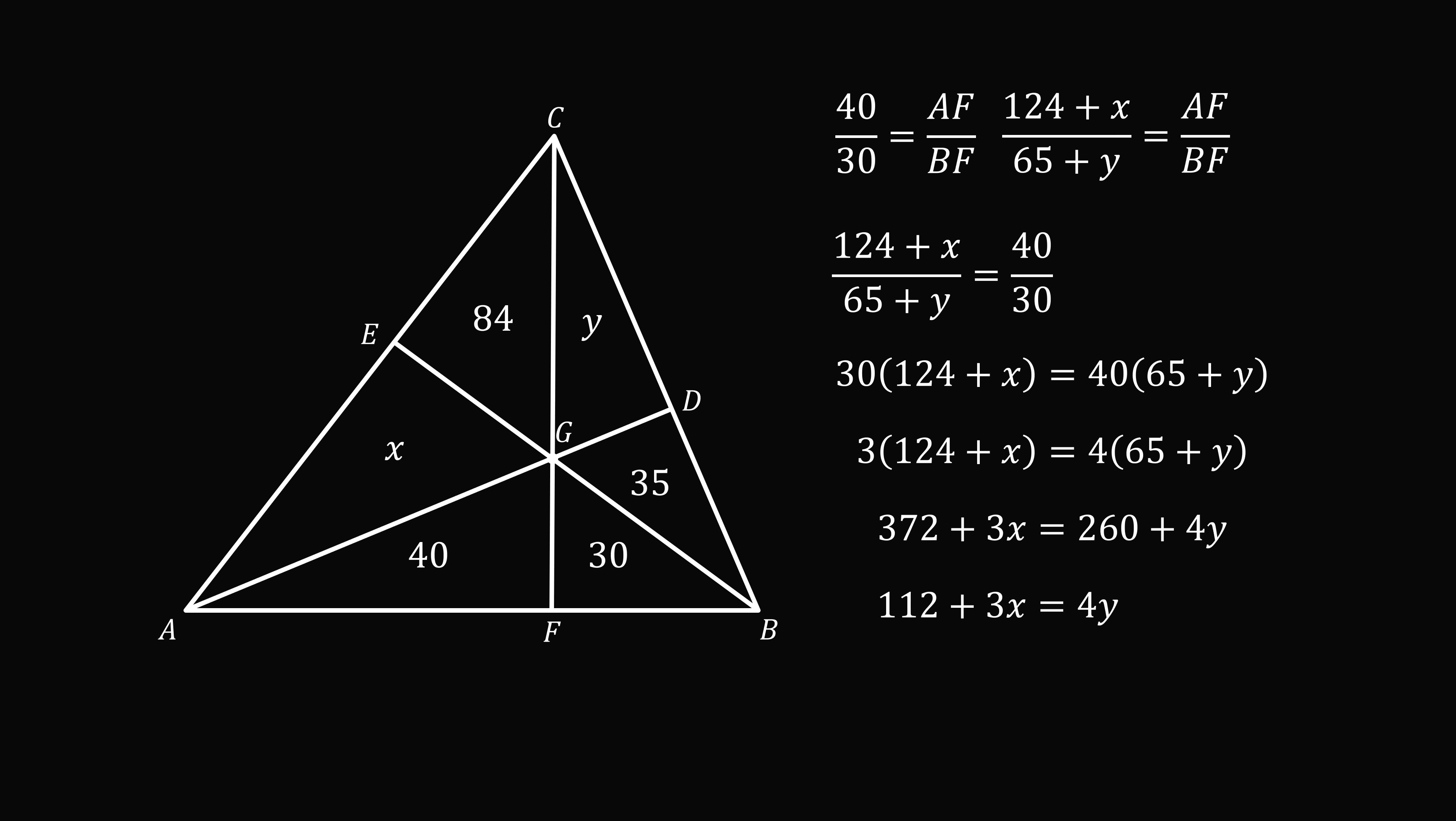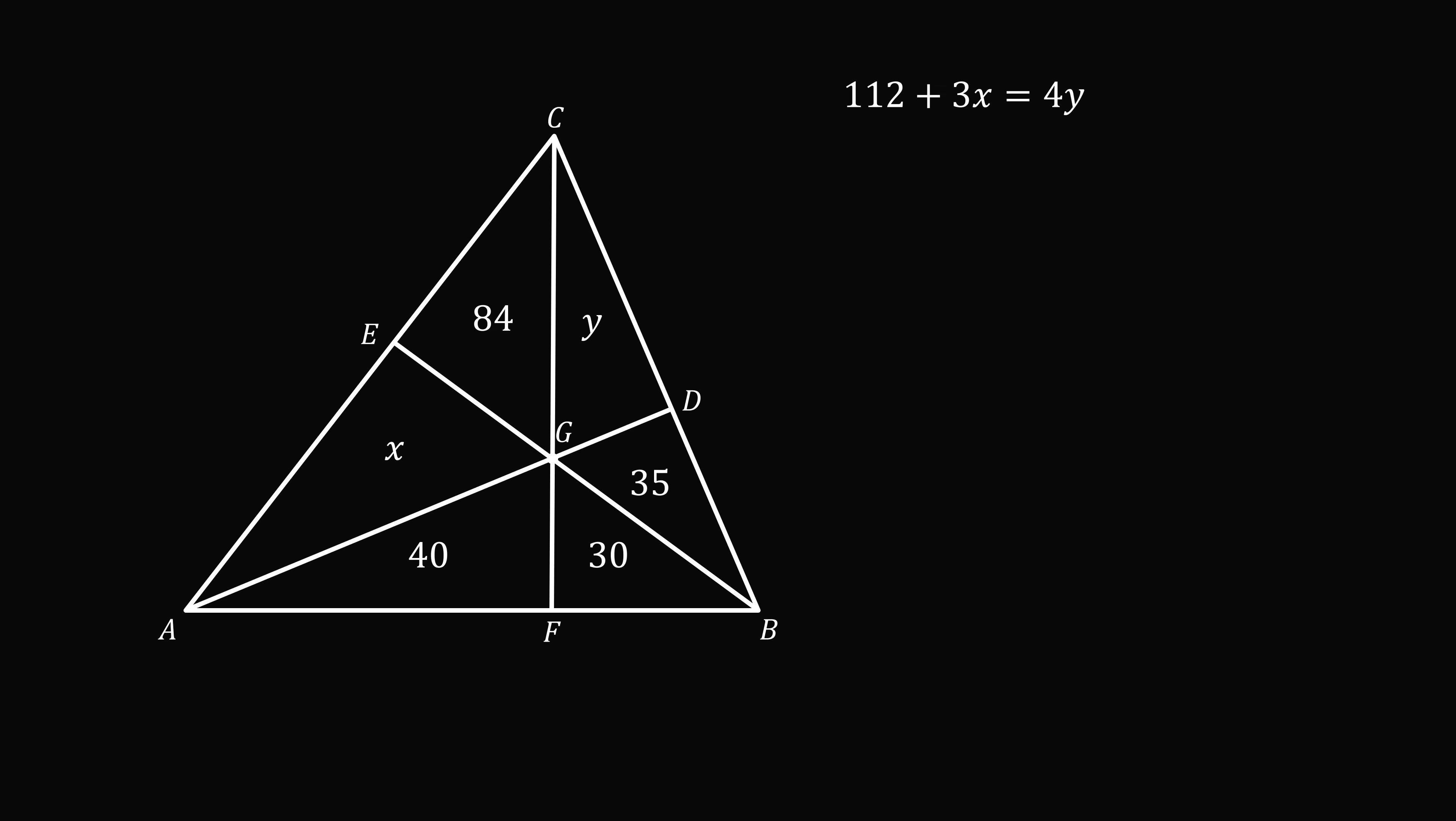So we made some progress, but we're still not there. We still need to figure out what the values of x and y are. So we need another equation. So we'll put this equation to the side. And now let's take another side of the triangle and try the same sort of thing. So let's look at side BC.